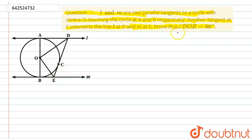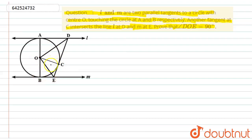We have to show that angle DOE equals 90 degrees. For the construction, we will join O to C. This forms four triangles: triangle OAD, triangle ODC, triangle OEC, and triangle OBE. We will prove all four triangles are congruent — these two triangles are congruent, and these two triangles are congruent — so that we can find this angle.